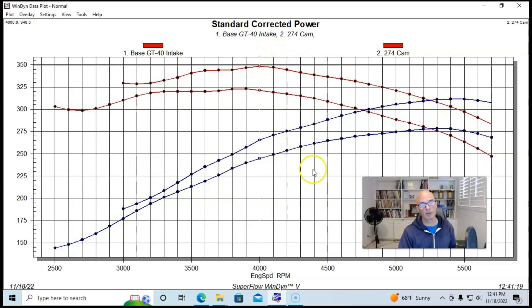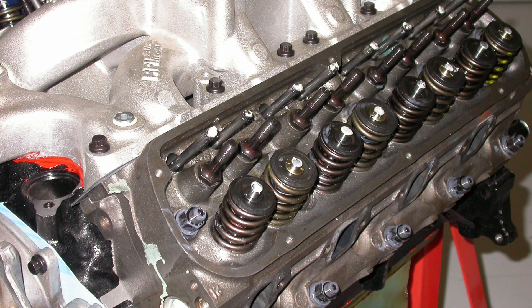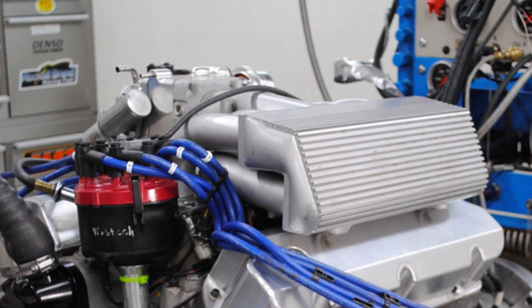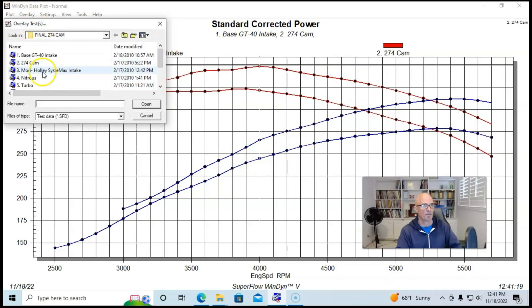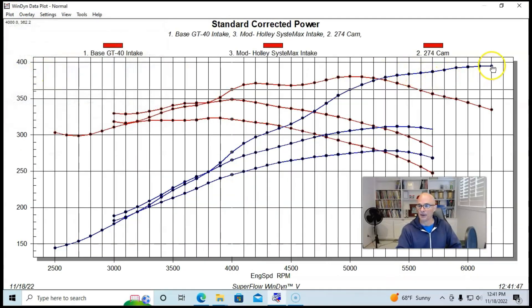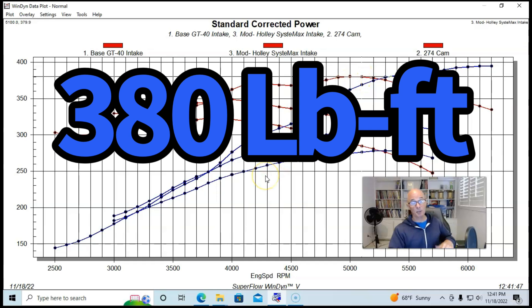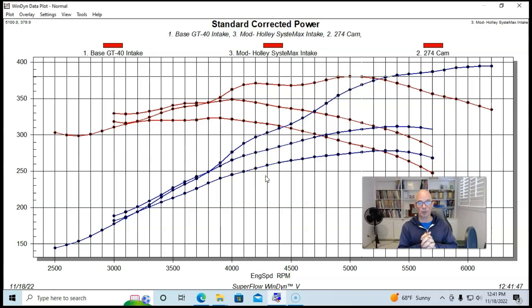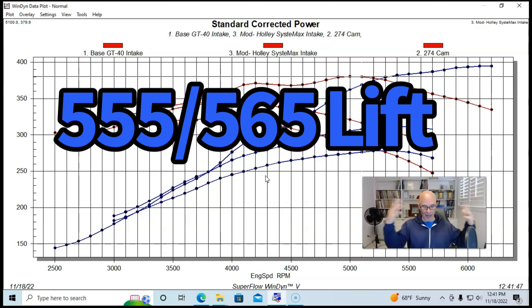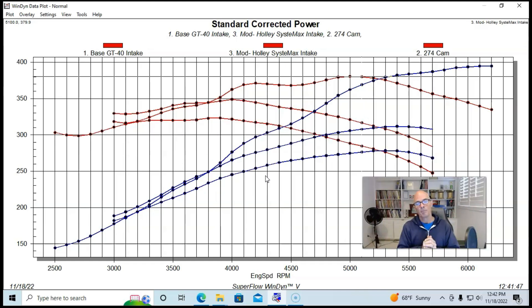Peak torque was up to 349 foot-pounds of torque. And actually this camshaft would be worth a lot more power because it has two other things that are holding back the power production on this. One are the cylinder heads. The factory cylinder heads are very restrictive. And then also the GT40 intake manifold. So let's see what happened when we did further modifications on this combination.